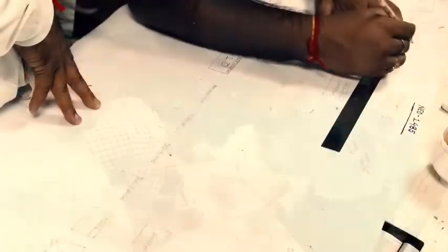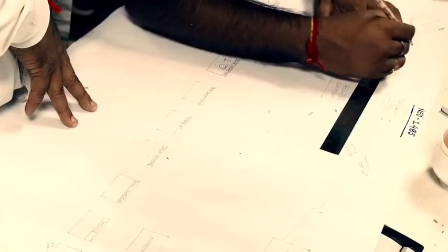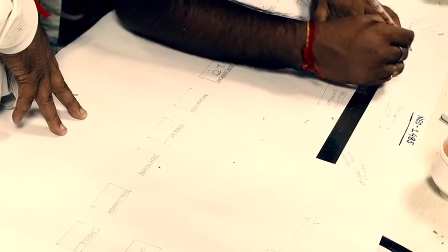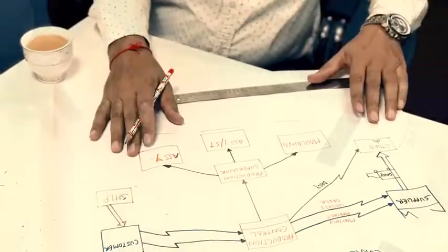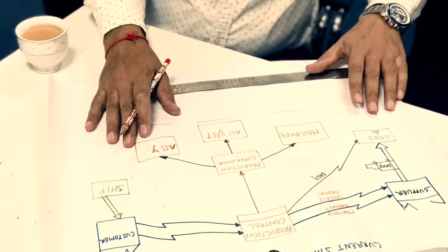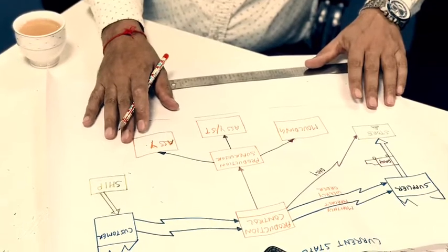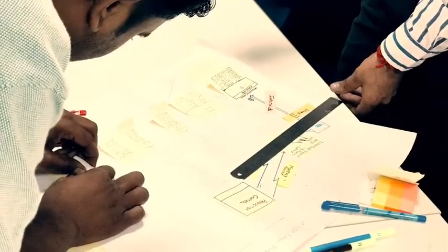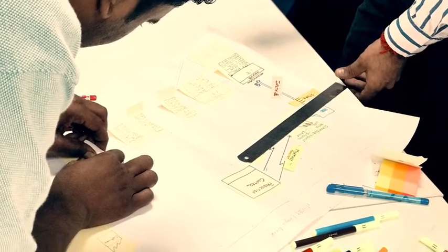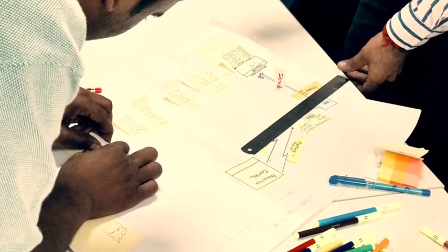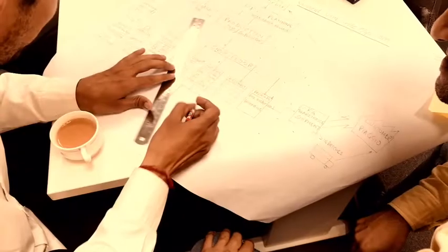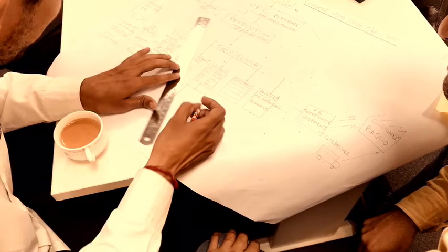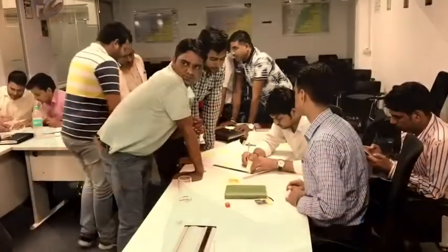At each step of the map, the practitioner evaluates whether value is being created and whether one or more of the wastes exist. The purpose of the value stream map is to identify those activities that add value and those that create waste, with the latter being targets for elimination.